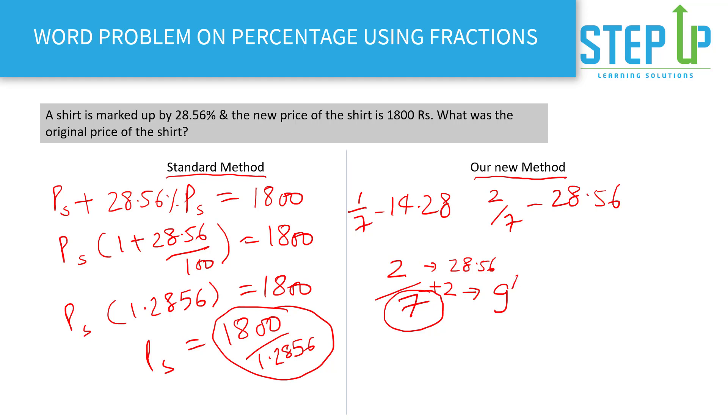That means if the multiplying factor is here 200, the same multiplying factor would be everywhere. That means in one by seven, two by seven, so seven times the multiplying factor of 200, that means your original price of the shirt was seven into 200 is 1400. That means in 1400 you added 28.56% which is your 400, and that's how you got 1800.